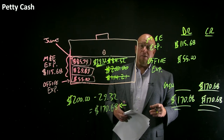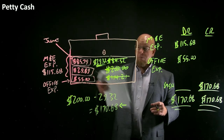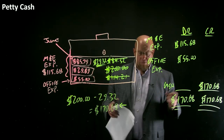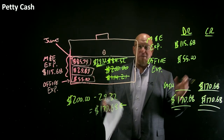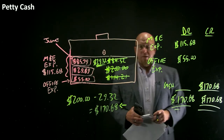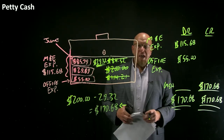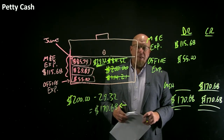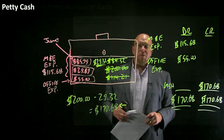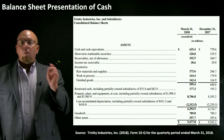Now we're ready to start over with a fresh $200 in the box, and we'll start buying lunches, postage stamps, reimbursing for taxi fare, and eventually we'll have to reimburse that fund once again.